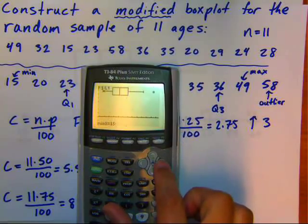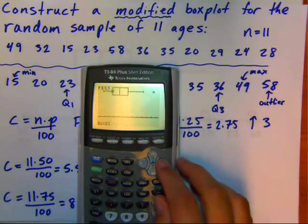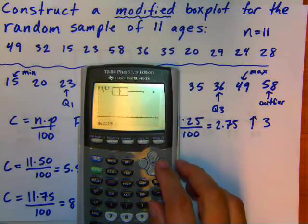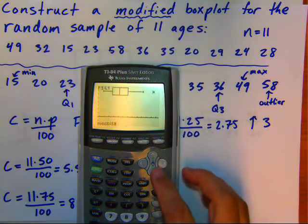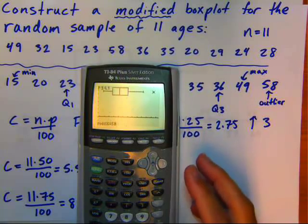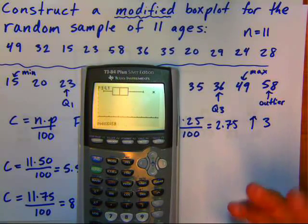Notice the minimum is 15. If I use my right arrow, Q1 is 23. The median, or same thing as Q2, is 29. Q3 is 36. My max is 49. And my outlier is 58. So it's a nice, fast way to get to those values. Checking your work on a test you'd want to show your work and use this as a backup.